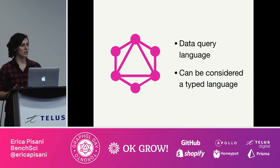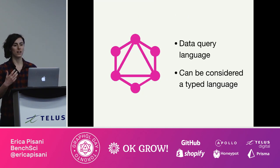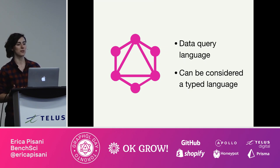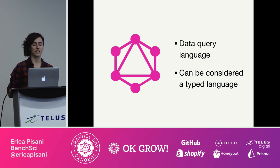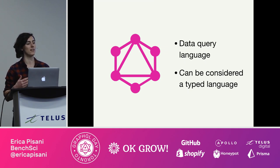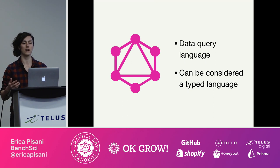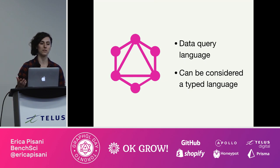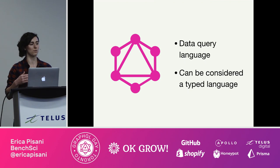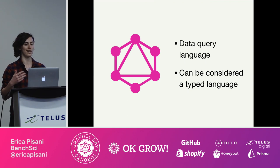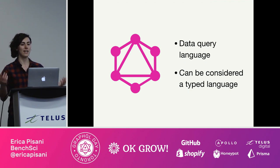GraphQL — a lot of people are already really familiar with it, but just as a refresher, it's a data query language. For the purposes of this talk, it can be considered a type language because GraphQL is smart enough to reject invalid input if the data you're providing for a particular field doesn't match up with what it sees in the schema. For instance, if you provide a number for an email that accepts a type string, it'll tell you it's an invalid input type.